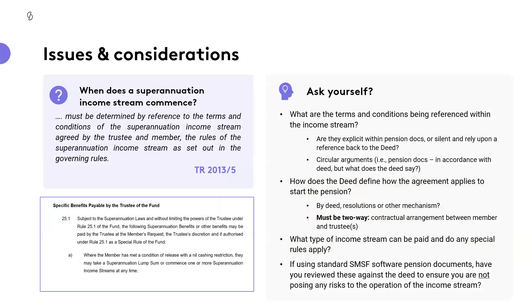When we think about issues at commencement, we have our Tax Ruling 2013-5 — the Bible of pensions in theory. When an income stream commences in accordance with the tax ruling, it's ultimately determined by reference to the terms and conditions of that income stream. It is agreed by the trustee and the member, and the rules of the income stream are set out effectively in the governing rules, and/or within the terms of the pension.